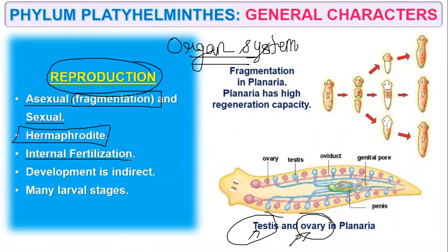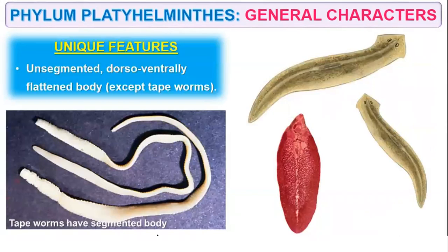Circulatory system is absent. Reproduction is by asexual means — that is by fragmentation — and sexual means are also seen, as they have testes and ovaries. They are hermaphrodite with internal fertilization. Development is indirect, with many larval stages.